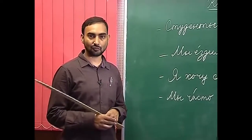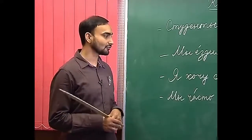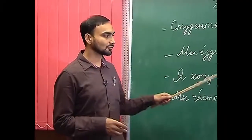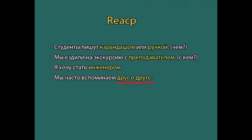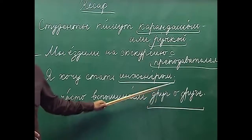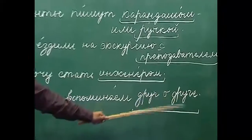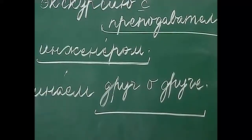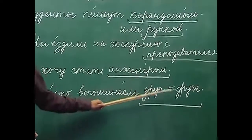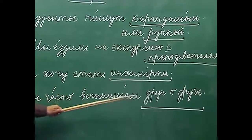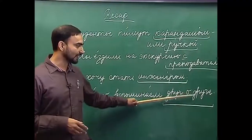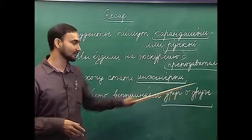For example: знакомиться, познакомиться, встречиться, and so on. Apart from this, we also discussed the expression 'друг друга', which means 'each other' or 'one another'. When we use 'друг друга', the first 'друг' stays in the nominative case and the second 'друг' changes its form as per the case it is being used in. For example: мы часто спаминаем друг о друге — we often remember about each other. Here спаминать takes the prepositional case, so the second 'друг' becomes 'друге'.